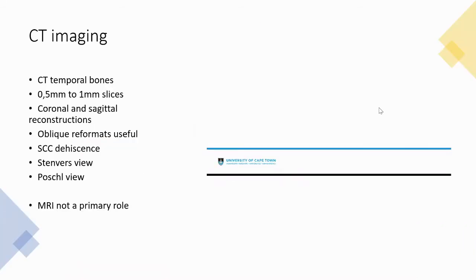For CT imaging, you want a high-resolution CT of the temporal bone with slices of approximately 0.5 to 1 mm. Coronal and sagittal reconstructions are most useful, though oblique formats — specifically the Stenver's view and Poschl view — can help significantly, especially in semicircular canal dehiscence. MRI does not play a primary role in third window lesions.